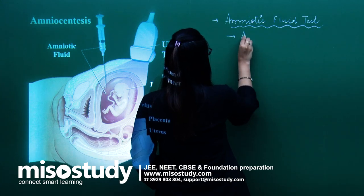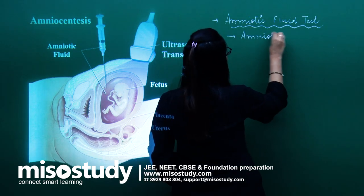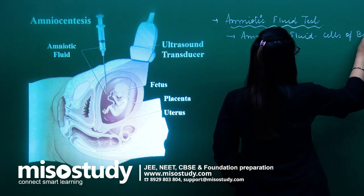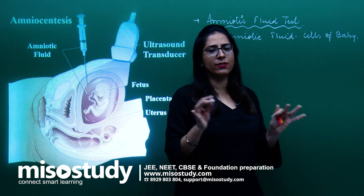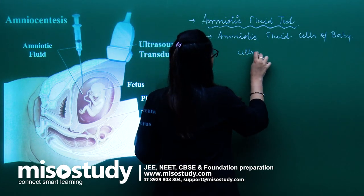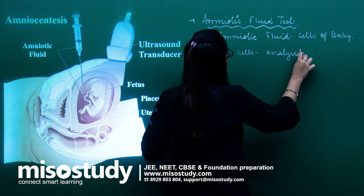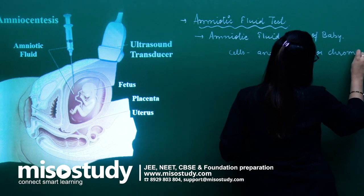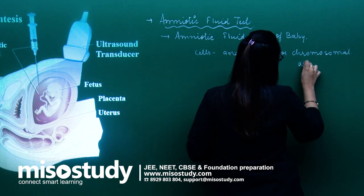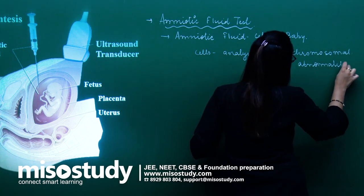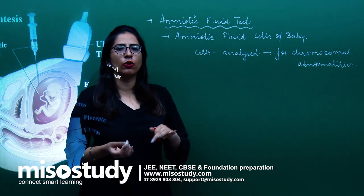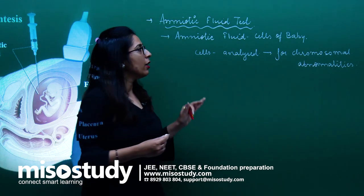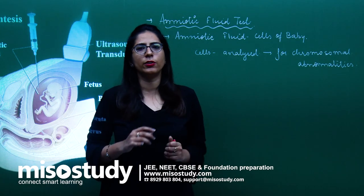The amniotic fluid has cells of the baby. Once the amniotic fluid is taken out, these cells are analyzed for chromosomal abnormality. If there is any kind of chromosomal abnormality, genetic disorder, or inherited disorder present, that can be easily detected.